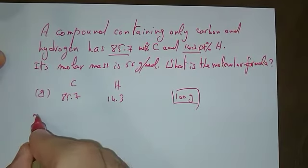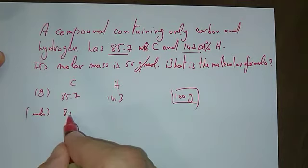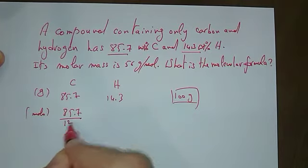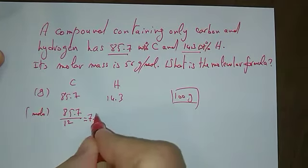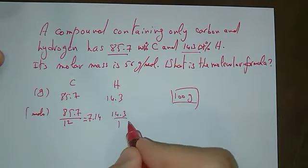Let's change it into moles. What I do is 85.7 divided by 12. This will be the moles, 7.14. And 14.3 divided by 1 gram per mole for hydrogen equals 14.3.